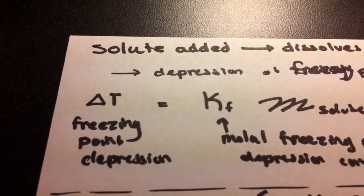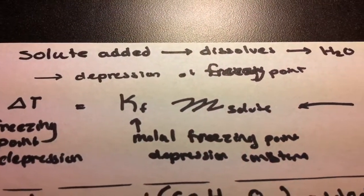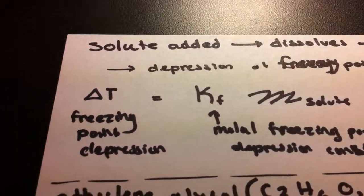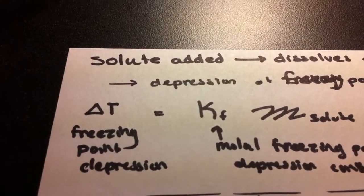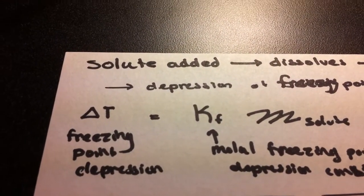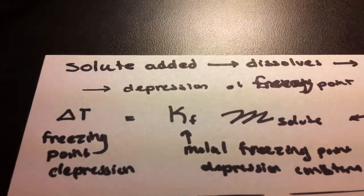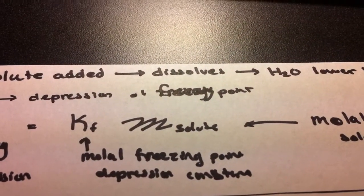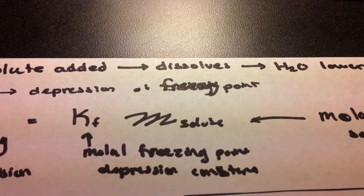This is exemplified by this equation: delta T equals KF times M solute. Delta T refers to the freezing point depression, how much lower our freezing point is going to be once we add a solute. KF refers to the molal freezing point depression constant.